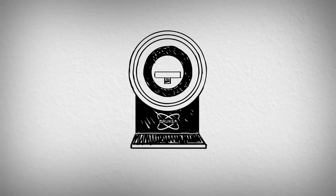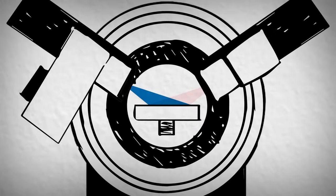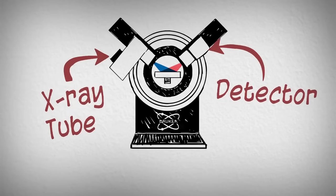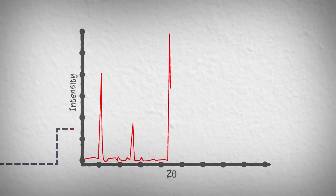In an X-ray diffraction experiment, a sample is placed into the center of an instrument and illuminated with a beam of X-rays. The X-ray tube and detector move in a synchronized motion. The signal coming from the sample is recorded in a graph, where peaks are observed related to the atomic structure of the sample.